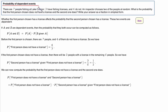Looking now at probability of dependent events, we take a look at this example. We see that there's seven people fishing in Lake Connor, three have fishing licenses, and four do not. An inspector comes and chooses two of the people at random. What's the probability that the first person chosen does not have a license and that the second one does?